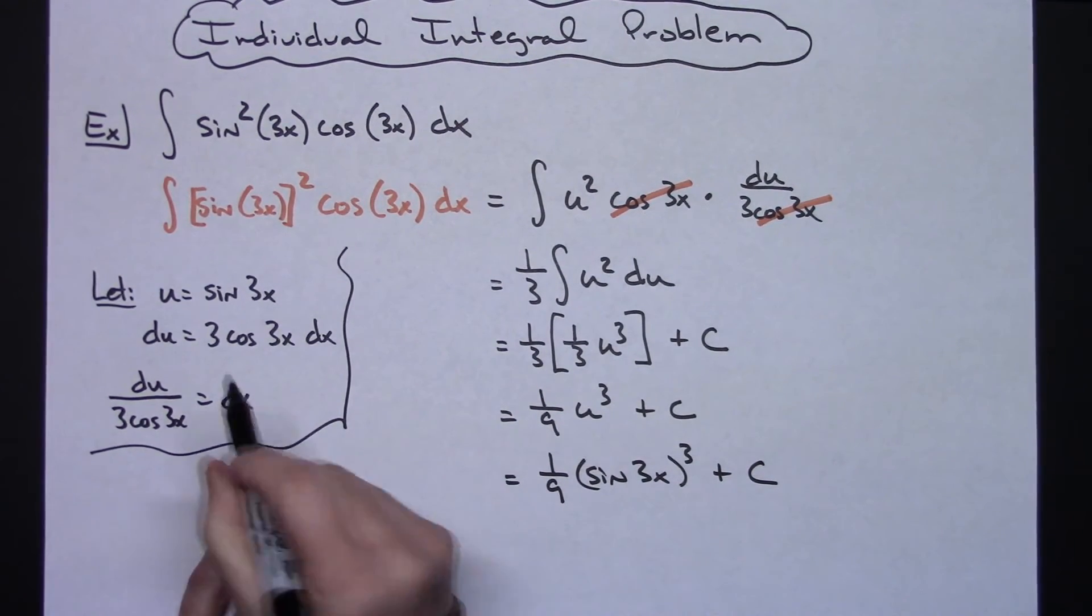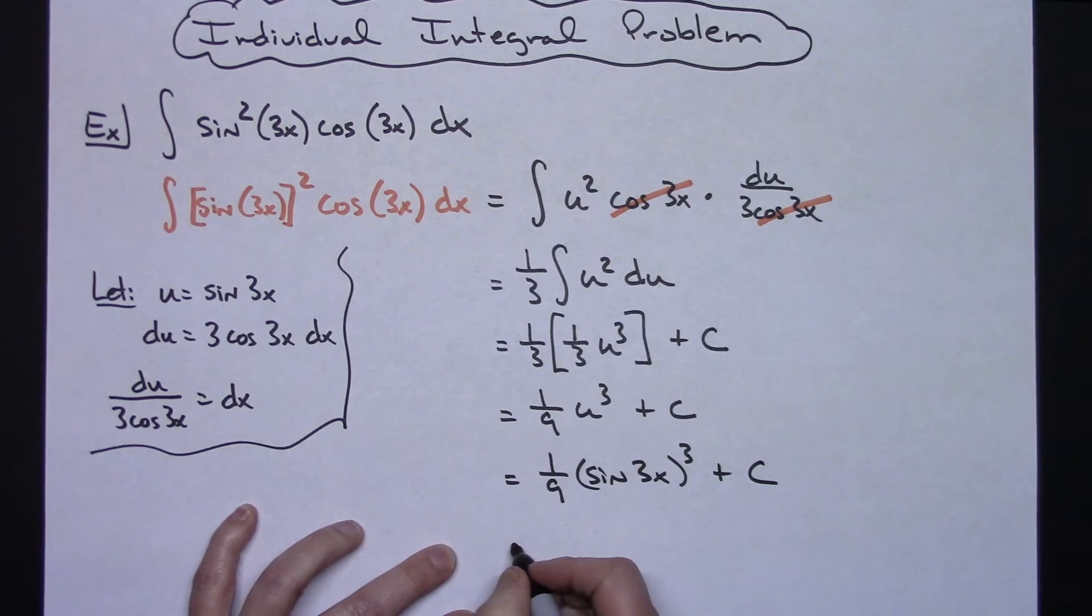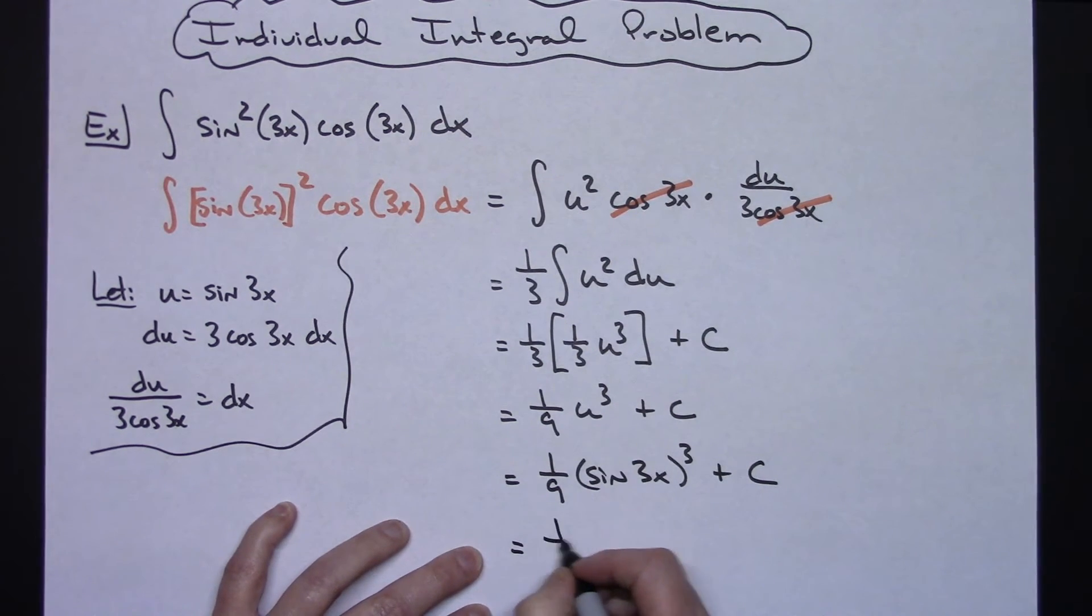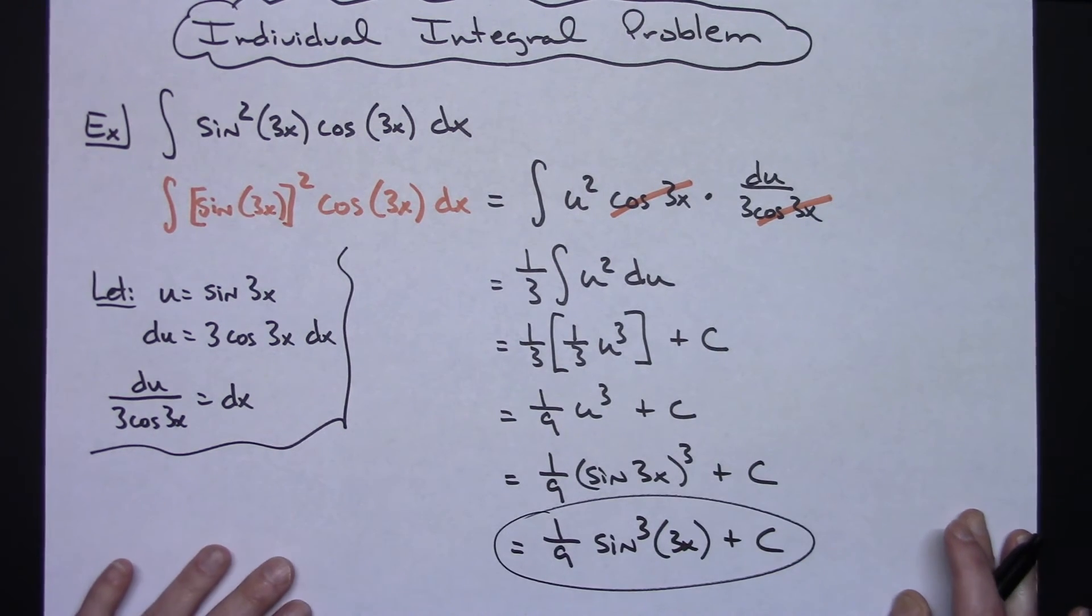But if you want to put it back in that same notation, which is pretty common in a calculus class, then you'd have a one-ninth sine to the third power of 3x there plus C.